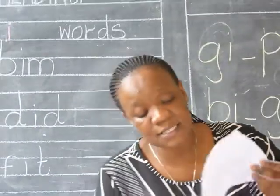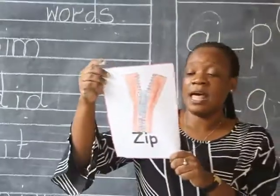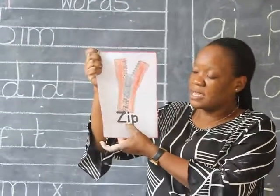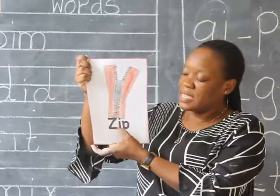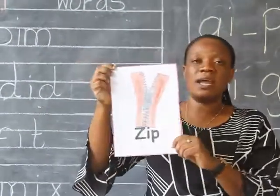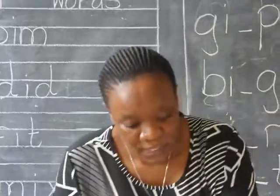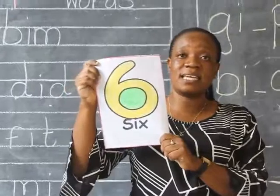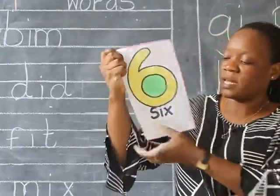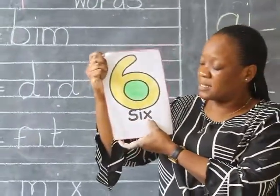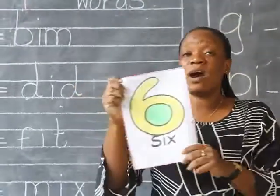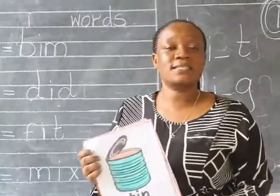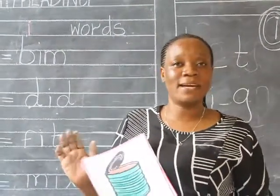Another flashcard is for zip. The word zip is a three-letter word which starts with z, i, bu — z, i, bu — and you're going to get the word zip. The final flashcard is number six. The word six starts with x, i, x — x, i, x — and the word we read as six. And this will mark the end of our lesson today. Bye-bye.